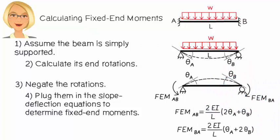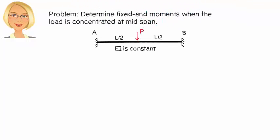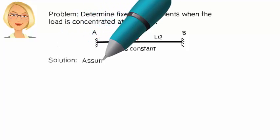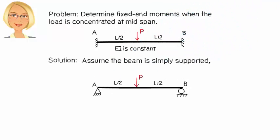Let's illustrate this process using two examples. Suppose we have a beam, fixed at both ends, subjected to a downward concentrated load at mid-span. We wish to determine its fixed-end moments. Assume a constant EI. To solve the problem, we first place the load on a simply supported beam and calculate its end rotations.